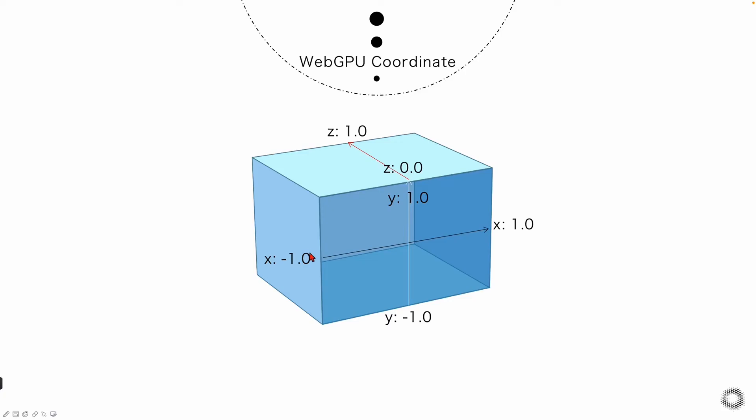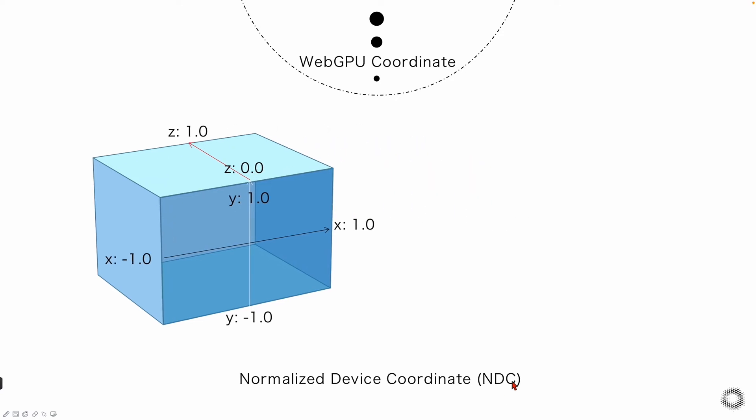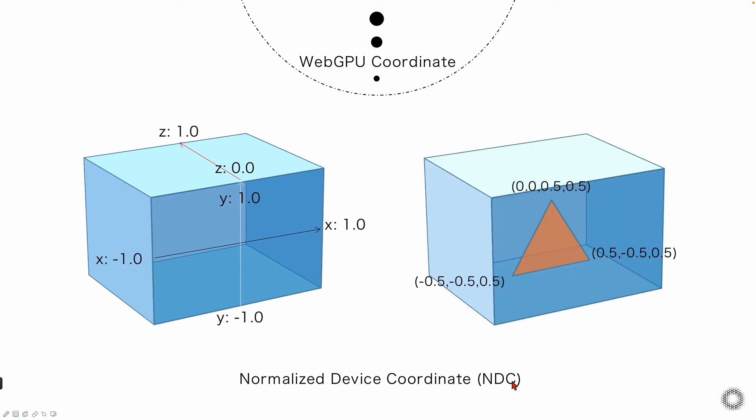Let's first understand the composition of the WebGPU coordinate system. The x-axis is distributed from left to right from minus one to one, the y-axis is from bottom to top from minus one to one, and the z-axis is the distribution of zero to one from the screen surface. We generally call this coordinate system NDC, short for normalized device coordinate.